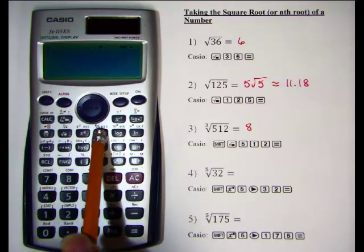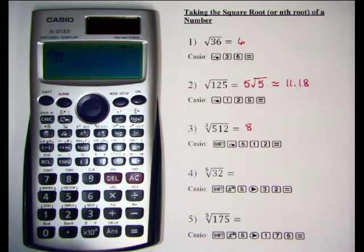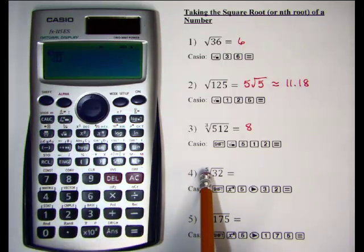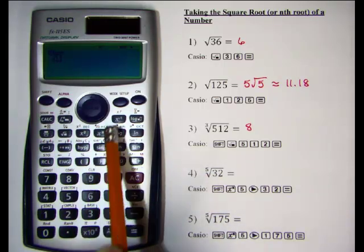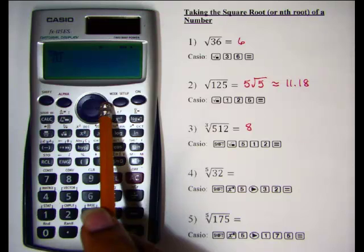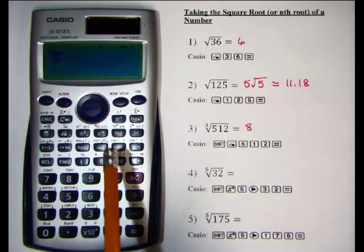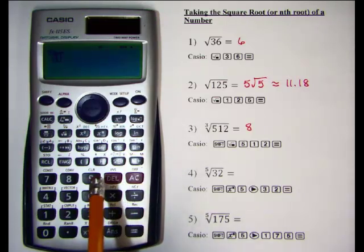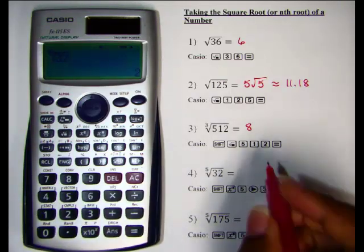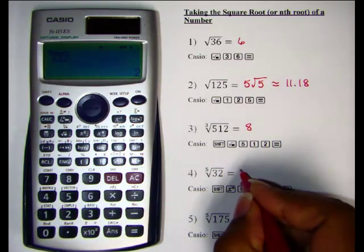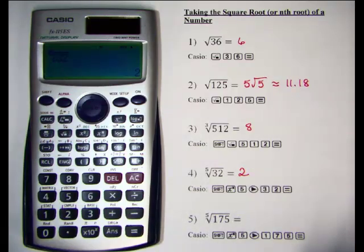This allows us to enter our index. Since it's a fifth root, the index is 5. We enter 5, then use the right arrow to move under the radical sign to enter the radicand of 32. The fifth root of 32 is 2.